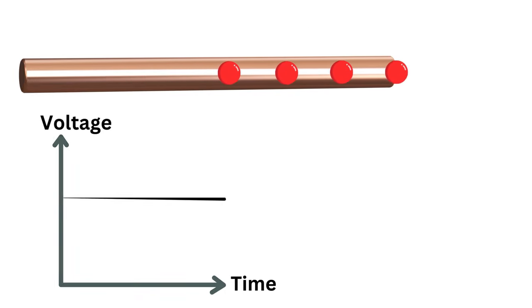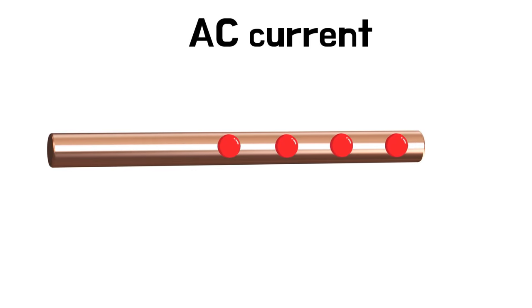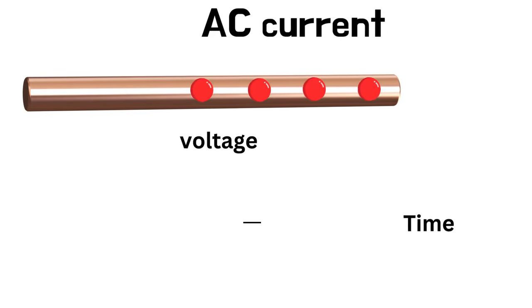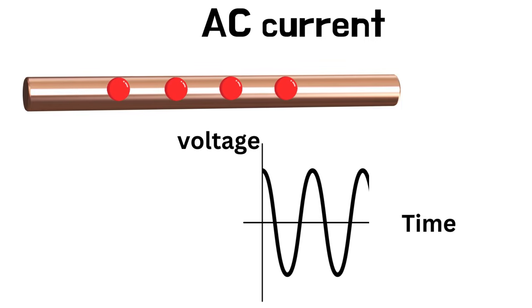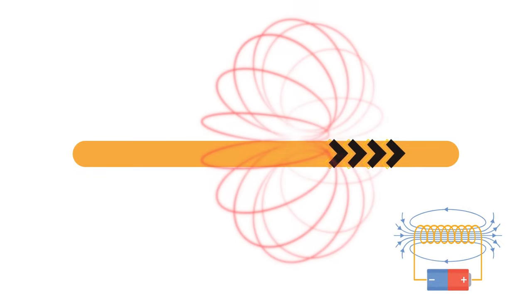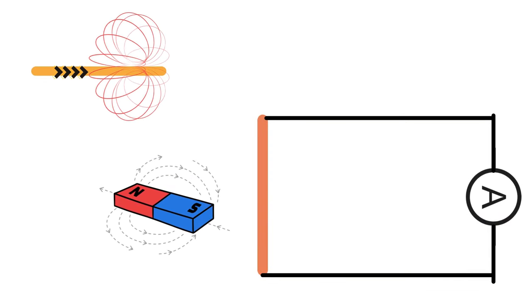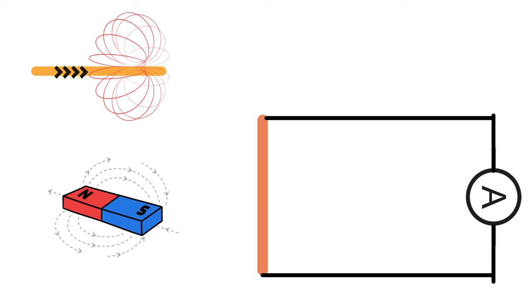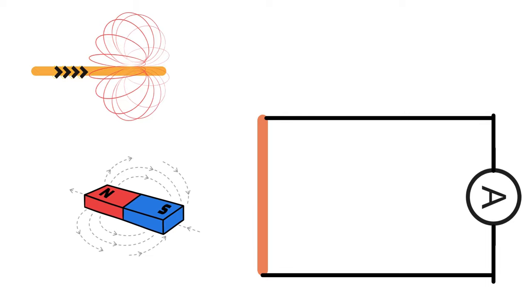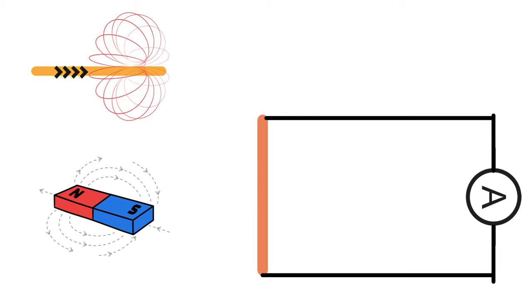In AC current, the electric current goes in the direction of an electric wire — this is why the voltage follows the direction of an electric wire. Now, let's look at the graph. Let's take an electric power wire. A magnetic field will form, and we can produce electricity. This is why we call it Electromagnetic Induction.